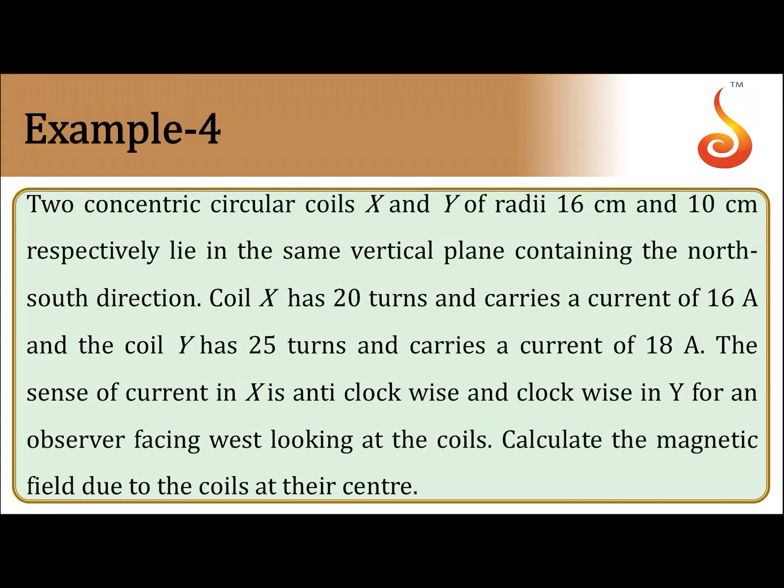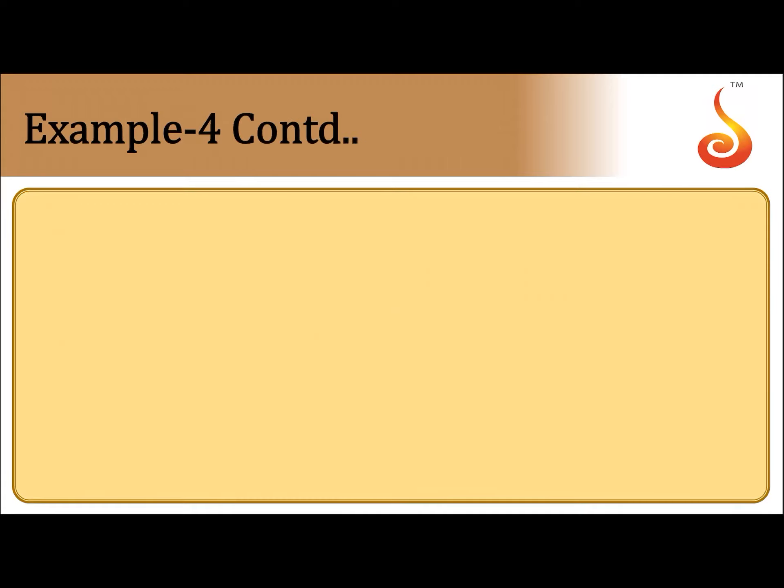So they have given radii of the coil, currents in the coil, direction of current as seen from the observer, number of turns is also given. They are concentric coils, they lie in the same vertical plane. Now let us draw the diagram for it.